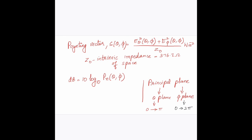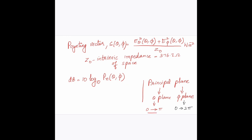When considering an antenna in a spherical coordinate system, there are two principal planes: the theta plane and the phi plane. For the theta plane, theta varies from 0 to π and phi varies from 0 to 2π. Generally, if not otherwise specified, theta should be considered as 0 to π and phi as 0 to 2π.